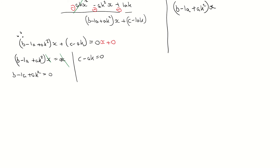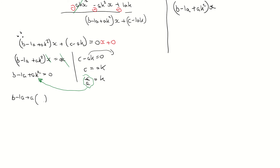Going back to the question, they want c squared equals a times a minus b — notice there is no k in that, so they're eliminating k. I'll take c minus ak equals 0, rearrange to c equals ak, then divide both sides by a to get k equals c over a. I'm now going to substitute c over a for k in the other equation, so I get b minus a plus a times (c over a) squared equals 0.